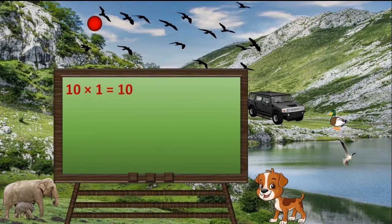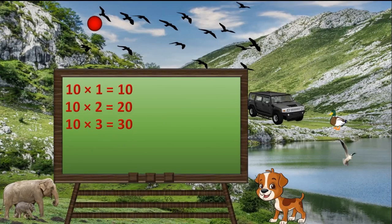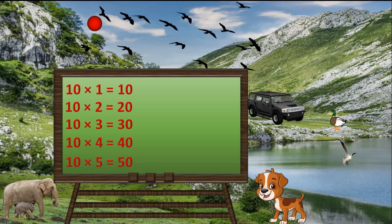10 ones are 10, 10 twos are 20, 10 threes are 30, 10 fours are 40, 10 fives are 50.